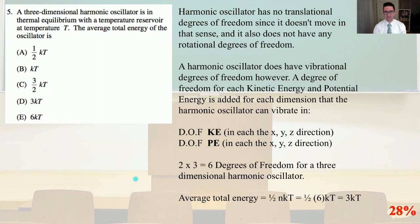A degree of freedom for the kinetic energy is in each the x, y, and z direction. The degree of freedom for the potential energy is again each in the x, y, and z direction. As the problem stated, it's three-dimensional. So we have two sets of three degrees of freedom. Two times three is six degrees of freedom for a three-dimensional harmonic oscillator.